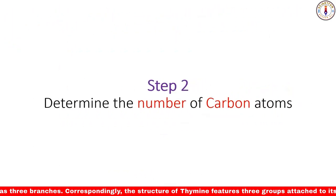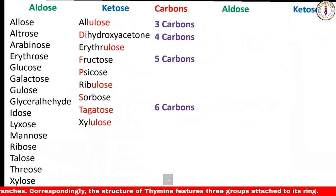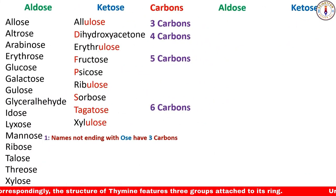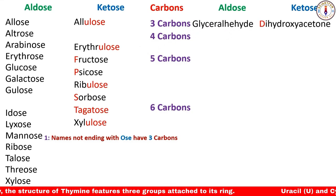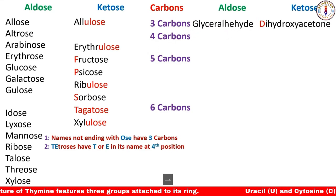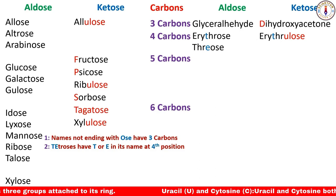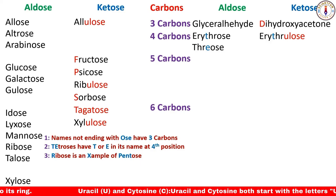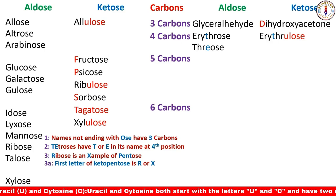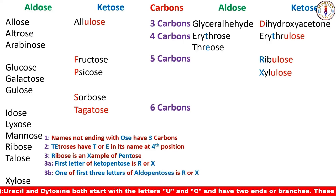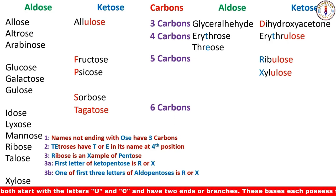In step two we determine the number of carbon atoms. Rule one: names not ending with '-ose' have three carbons. Rule two: tetroses have either T or E in their name at the fourth position. Rule three: 'ribose is an example of pentose' — if any ketose starts with either letter R or letter X, it will be a pentose. If any aldose has either R or X in the first three letters of its name, it will be a pentose sugar.